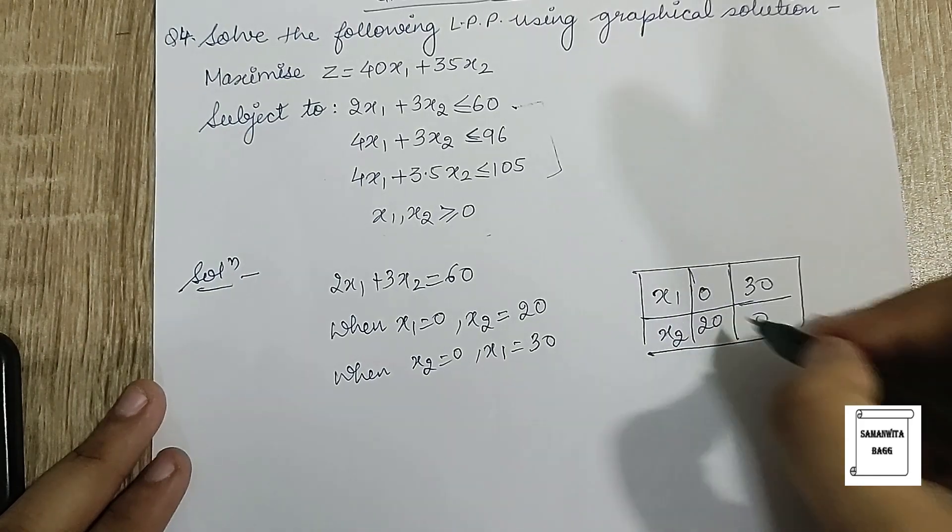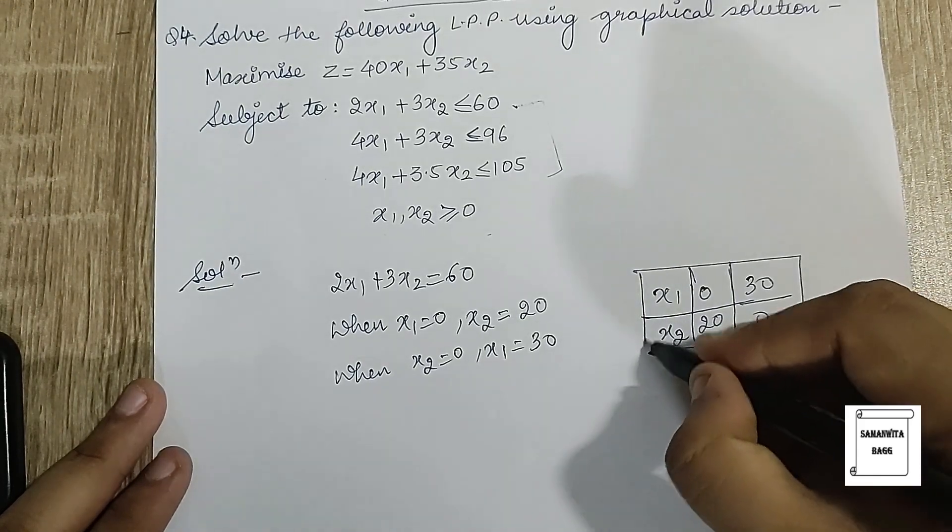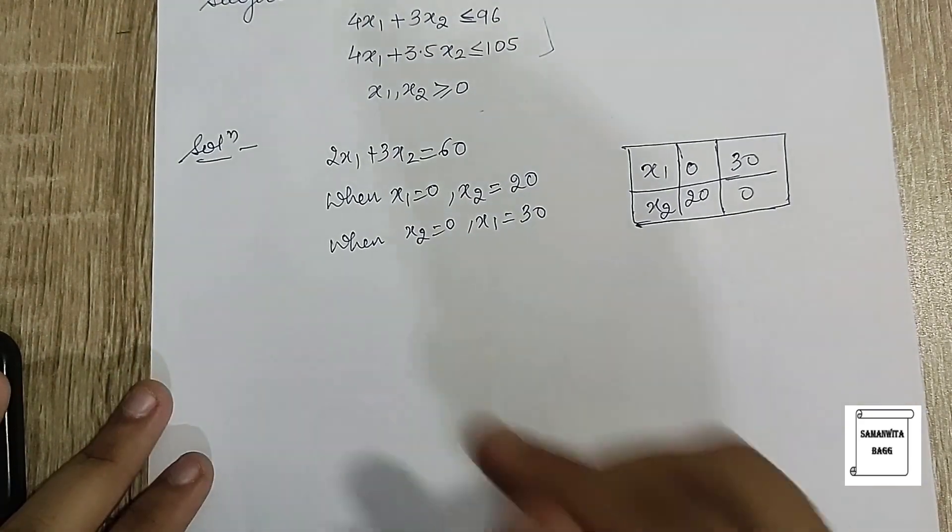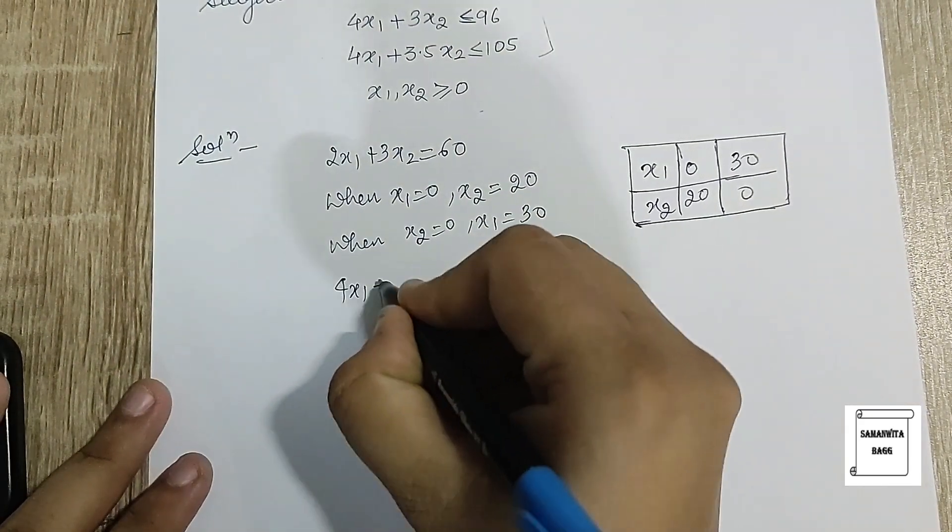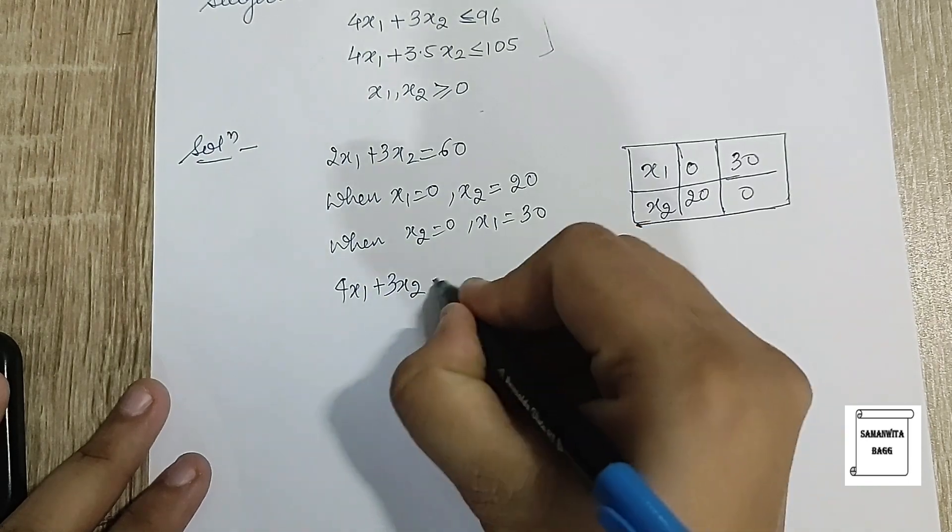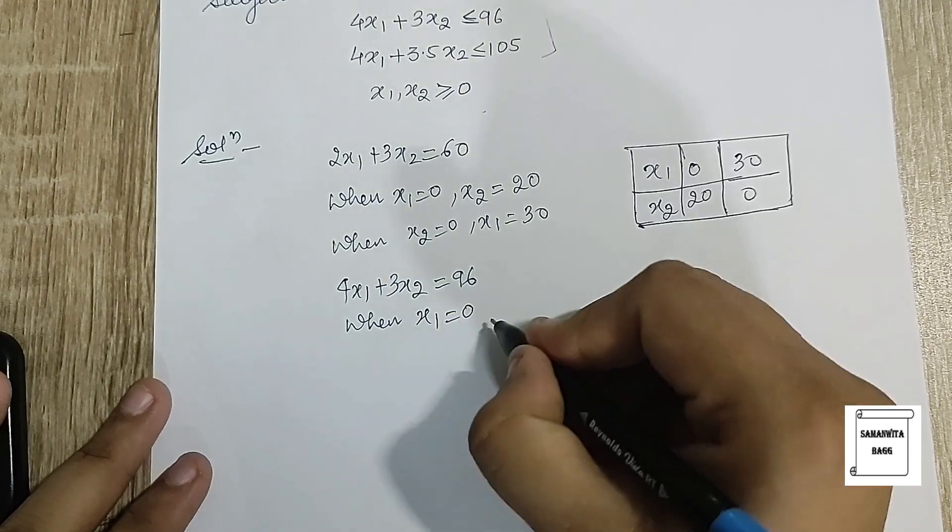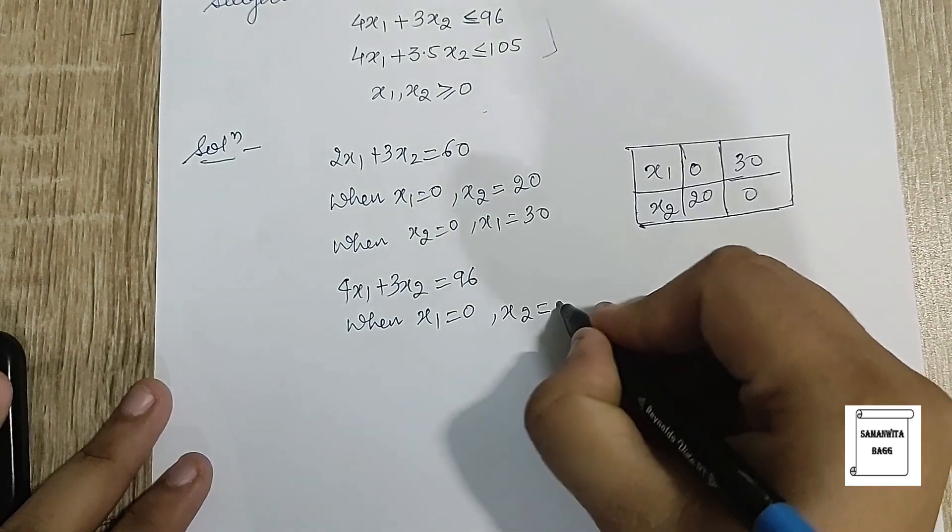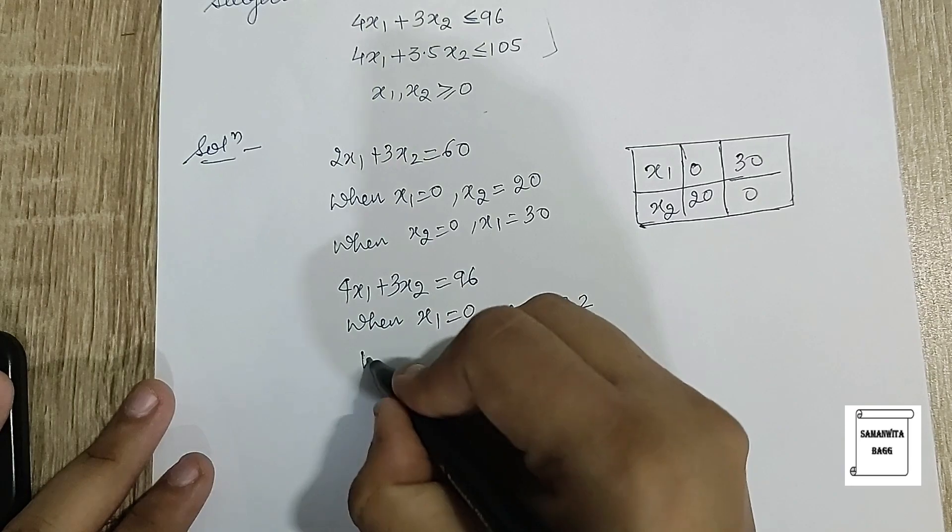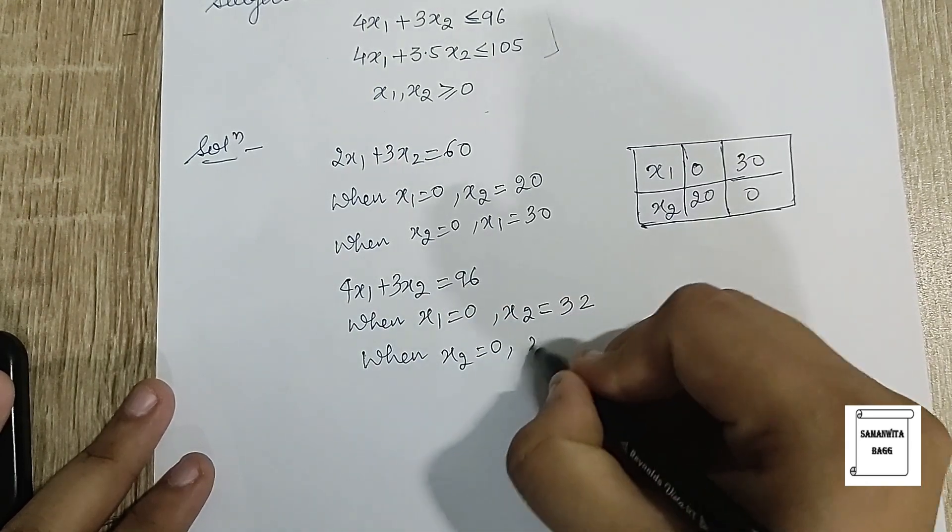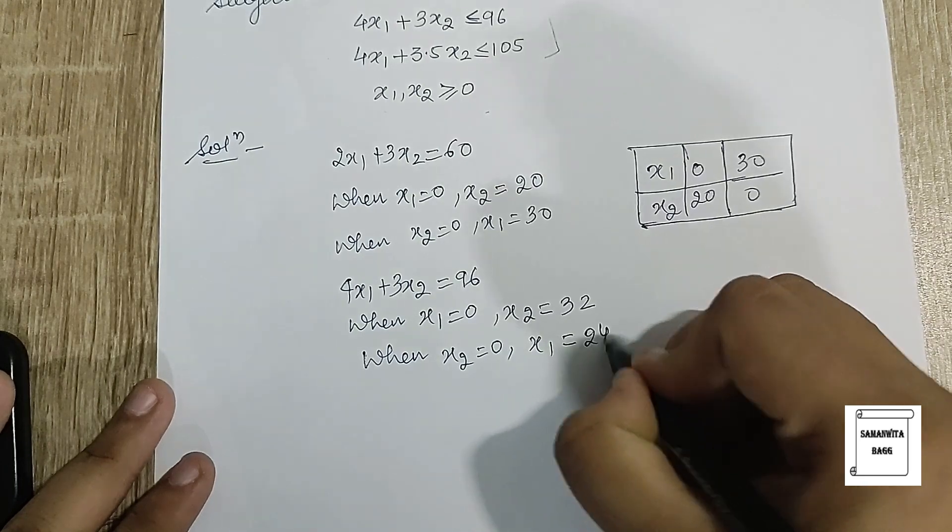These are the first two points that we need to plot on the graph paper. Now let's take the next equation: 4x₁ + 3x₂ = 96. When x₁ is 0, x₂ is 32, and when x₂ is 0, x₁ will be 24.